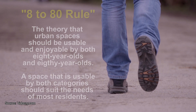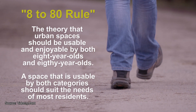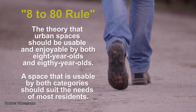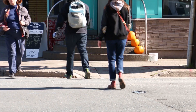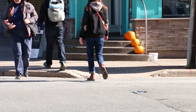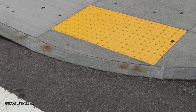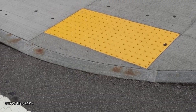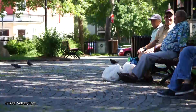Accessible sidewalks can be used by nearly anyone and follow the 8 to 80 rule. They have features such as lowered curbs at intersections, rumble strips to alert people they're approaching the street, and plenty of benches and shade for pedestrians to rest.